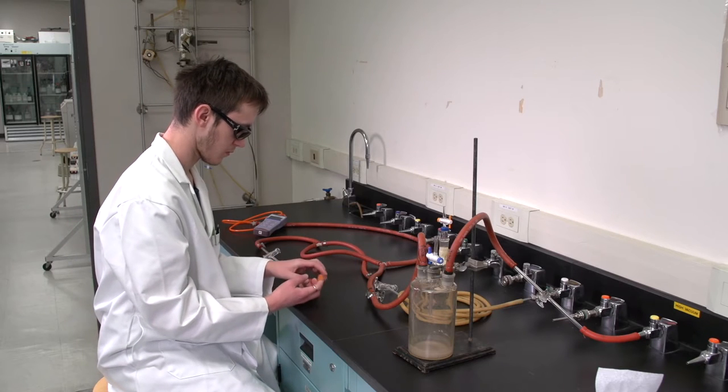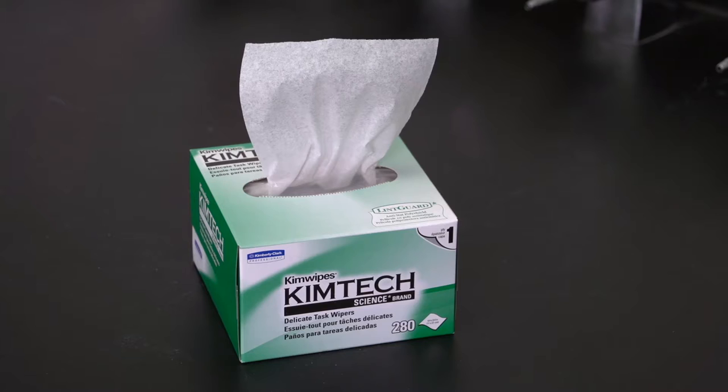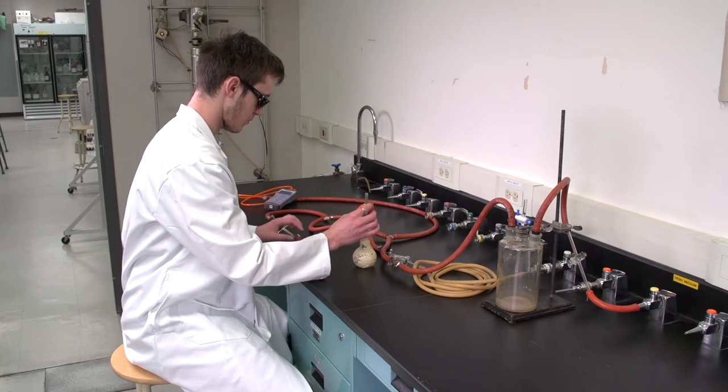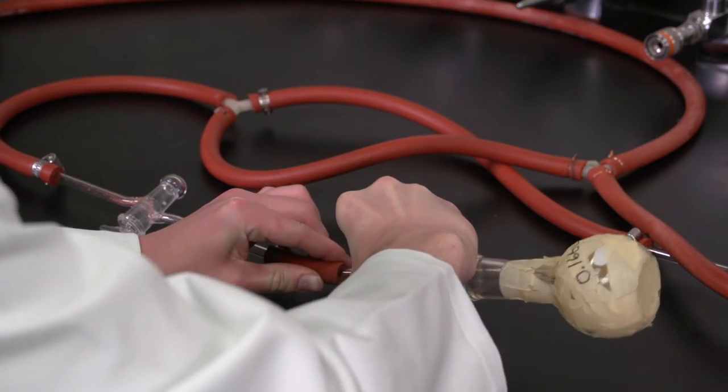To prevent the transfer of grease and moisture to the sample bottle, you will need to use finger cots or a lint-free tissue. Attach the sample bottle to the system, being careful to handle it by the stopcock.